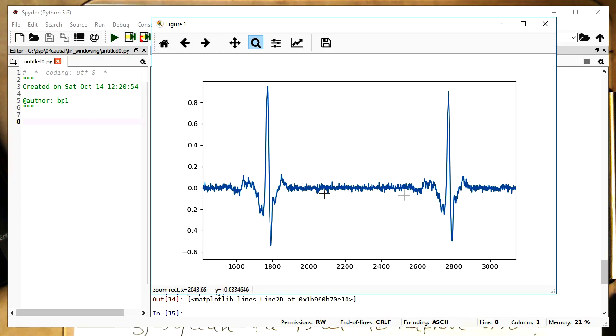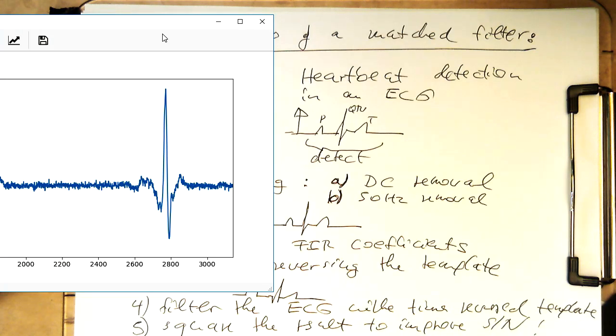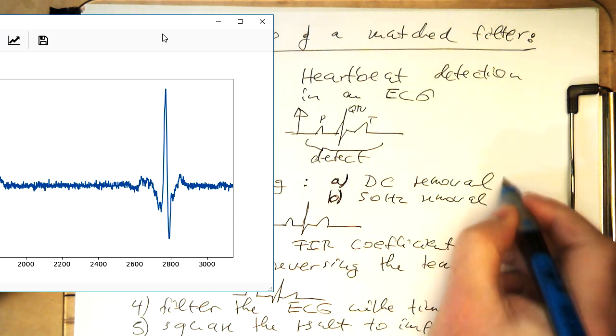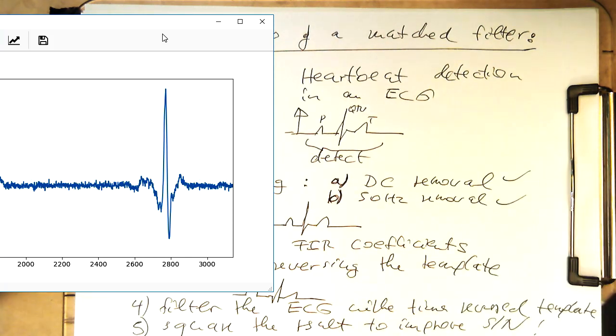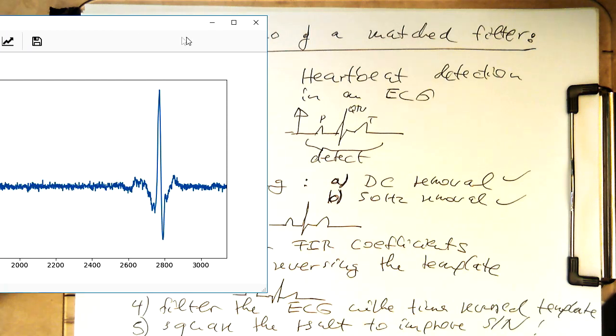And there's also no 50 Hertz in it. So we can tick that off. DC is removed, 50 Hertz is removed. And so we see we have a quite nice and clean ECG already here. So that's sorted.